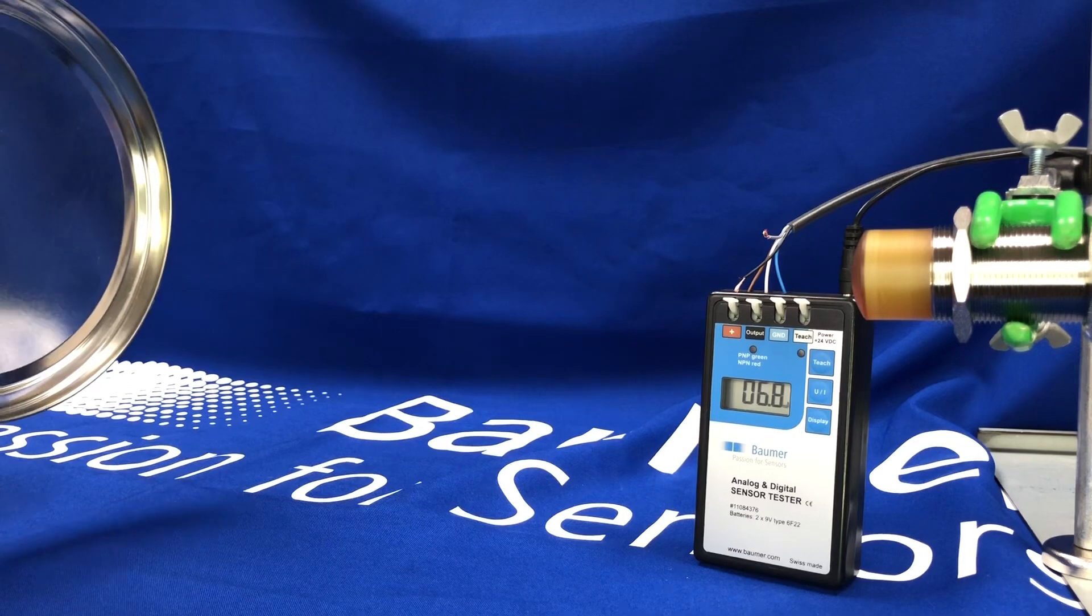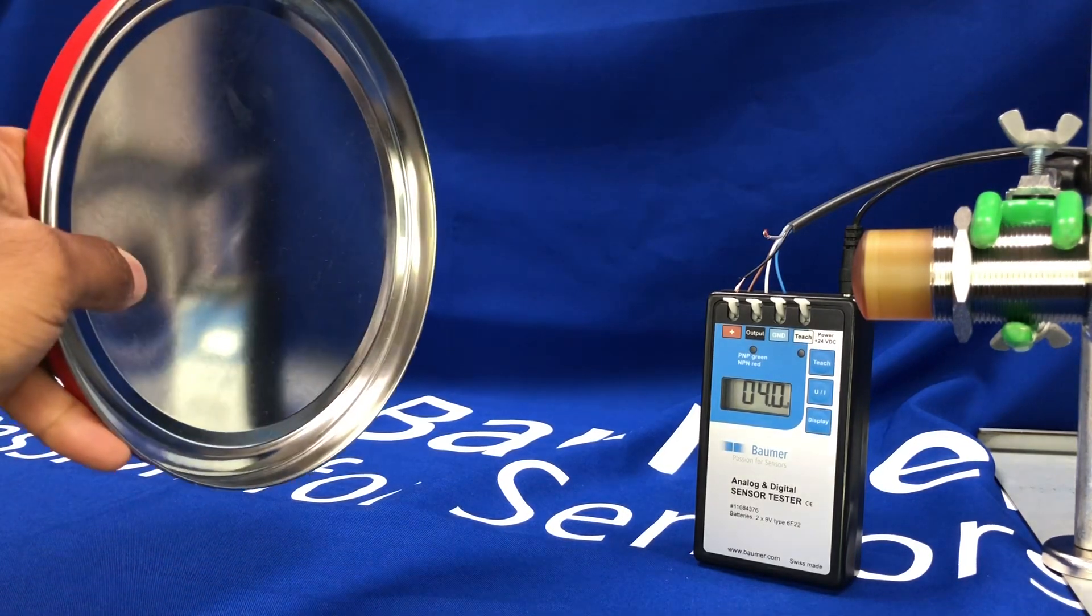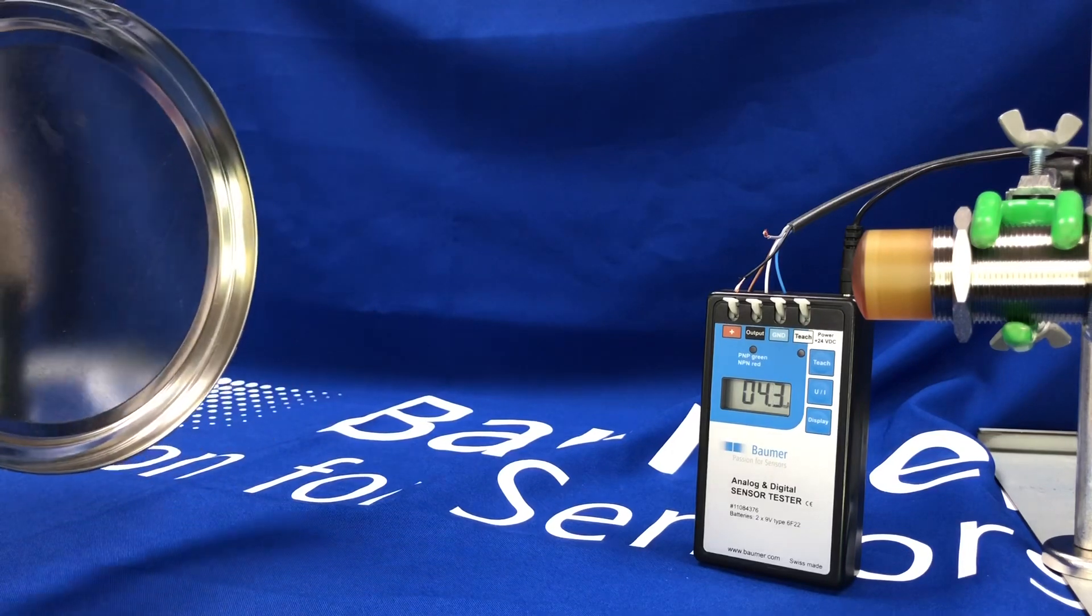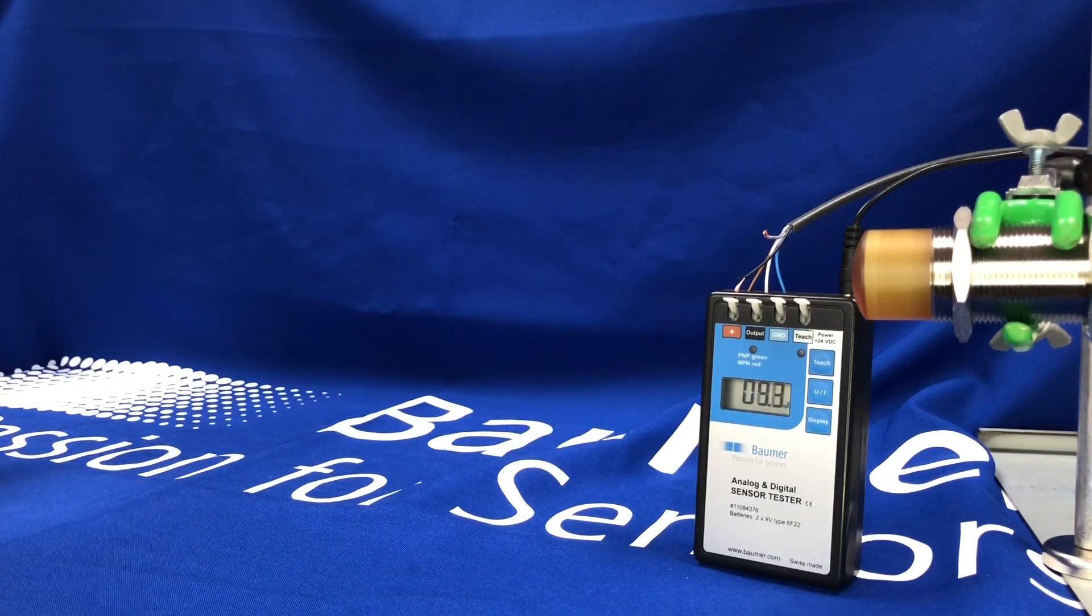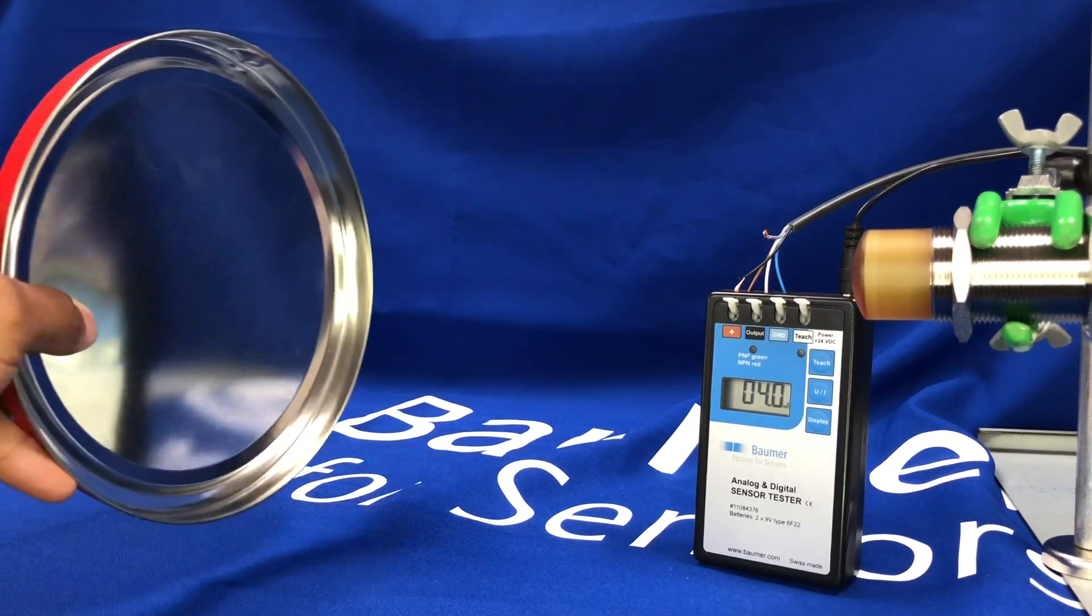To make the target closer, you see the output signal on the sensor tester there increase, decrease, from 4-20mA.